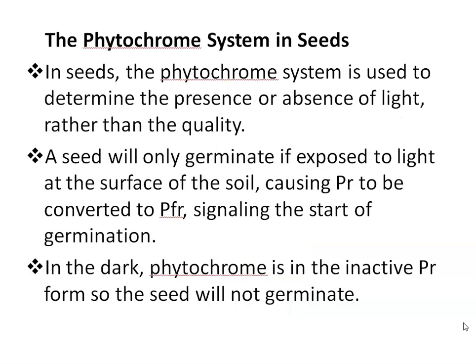Phytochrome system in seeds: The phytochrome system is used to determine the presence or absence of light rather than quality. This is especially important in species with very small seeds and therefore limited food reserves. For example, if a lettuce seedling germinated a centimeter under the soil surface, the seedling would exhaust its food resources and die before reaching the surface. So, a seed will only germinate if exposed to light at the soil surface, causing PR to be converted to PFR, signaling the start of germination. In the dark, phytochrome remains in the inactive PR form and the seed will not germinate.